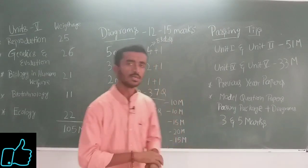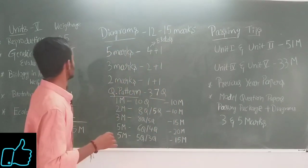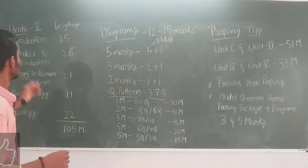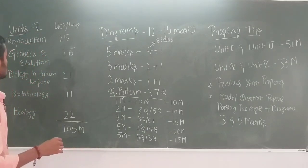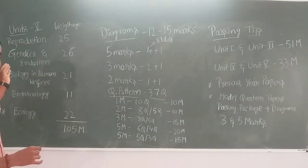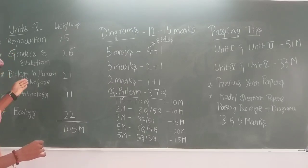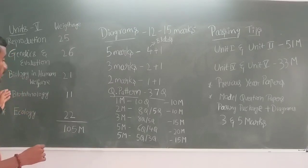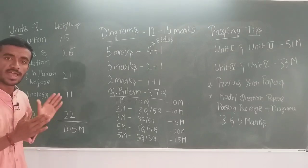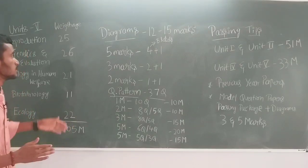First, we have got 5 units in biology. 1st unit: Reproduction. 2nd unit: Genetics and Evolution. 3rd unit: Biology and Human Welfare. 4th unit: Biotechnology. 5th unit: Ecology.